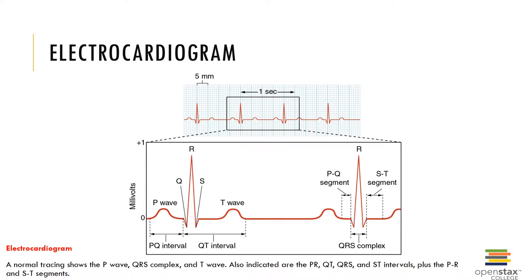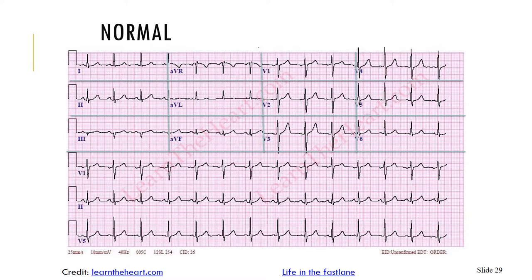The intervals between waves can be used for diagnostic purposes. The PR interval, if greater than 200 milliseconds, can indicate damage to the AV node. The QT interval, if increased in length, is a strong indicator of increased risk for heart attack and suggests ventricular tachycardia. Tachycardia is a condition in which the heart rate is faster than normal, generally greater than 100 beats per minute. Differences in EKGs can demonstrate both normal and abnormal wave patterns.